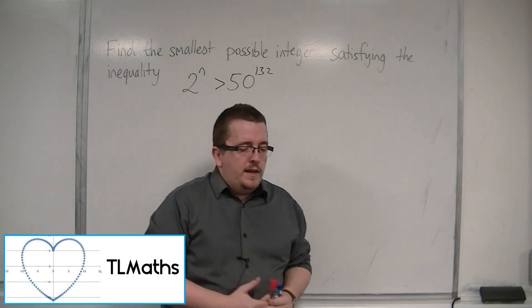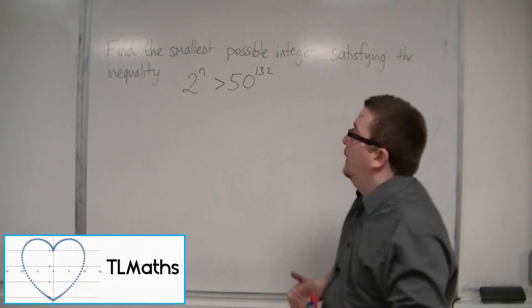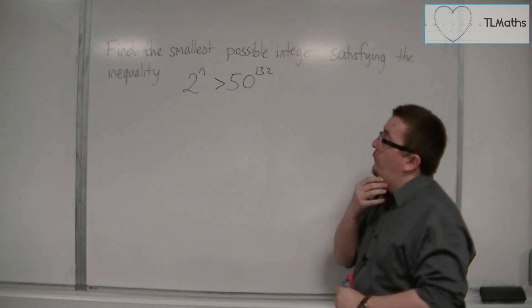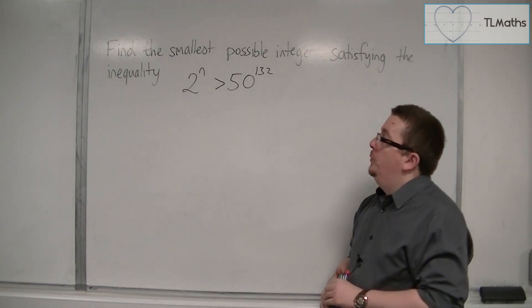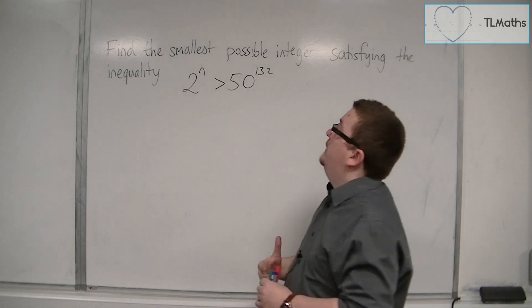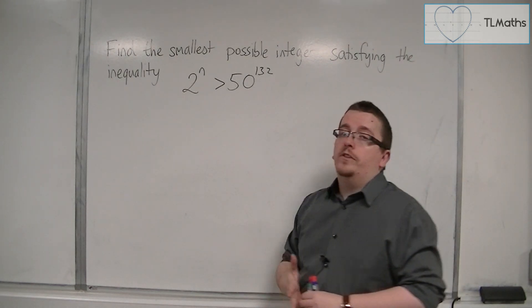With this problem, we need to solve an inequality using logarithms. We have 2^n > 50^132.